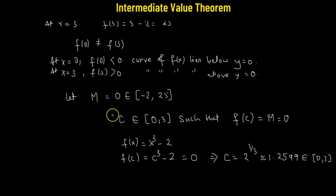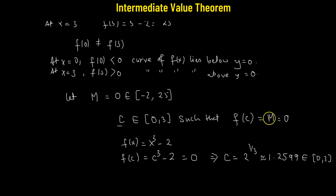So our intermediate value theorem is now proved, which tells us that there is going to be at least one value of c for which there exists a value of m lying between the interval negative 2 and 25.